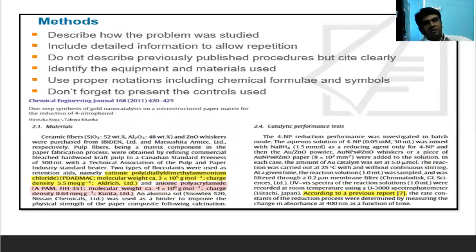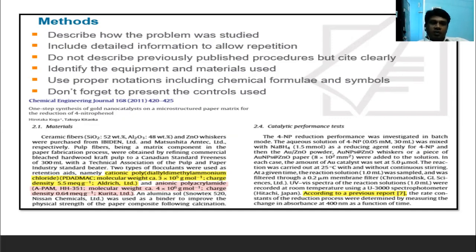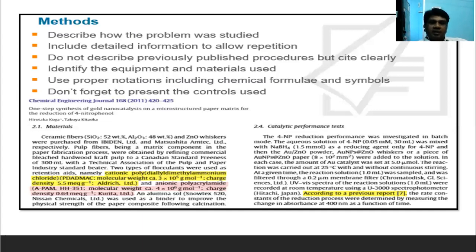The Methods section should describe how the problem was studied. Include detailed information to allow replication. Do not describe previously published procedures, but cite them clearly. Identify the equipment and materials used, and use proper notation for chemical formulas and symbols. For example, the molecular weight of cationic poly-dimethyl ammonium chloride is 3×10⁵, with a charge density of 5.5. Also, cite previous reports clearly.